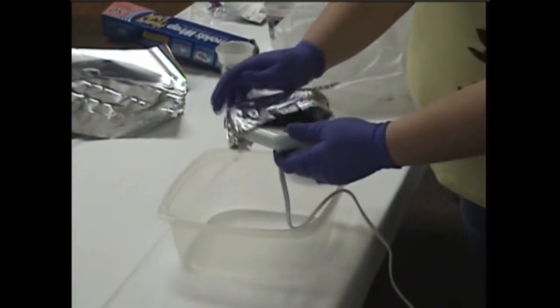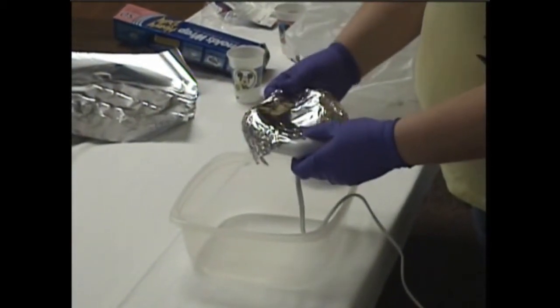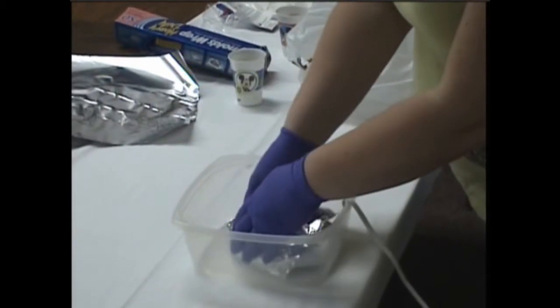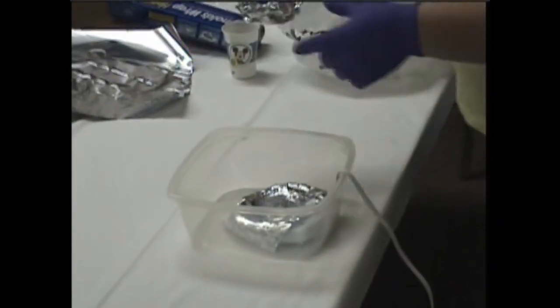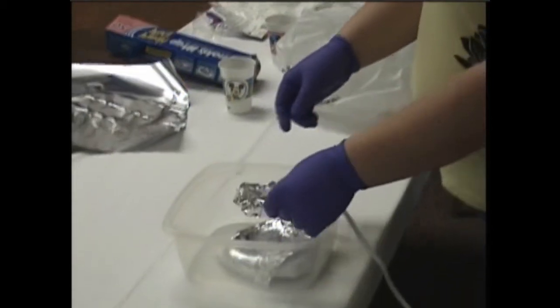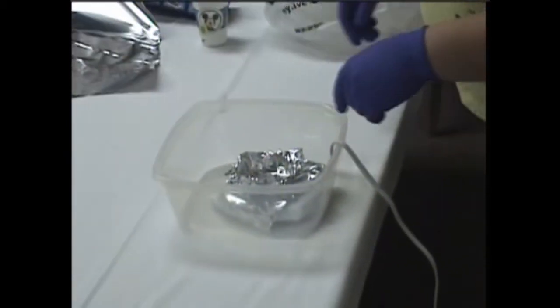You put foil over the candle warmer. Then you need a container to put the superglue in. I just made one out of aluminum foil.